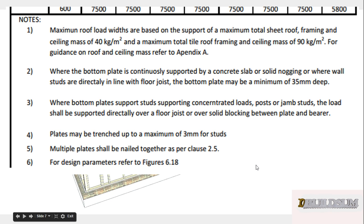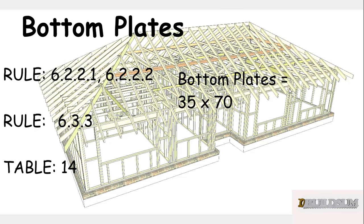The other thing to look at is down the bottom of the table — note 2. Where the bottom plate is continuously supported by a concrete slab or solid nogging, or where the wall studs are directly in line with the floor joist, the bottom plate may be a minimum 35mm deep. So we've confirmed we use 35 by 70 for our bottom plate — 70mm wide, 35mm deep.